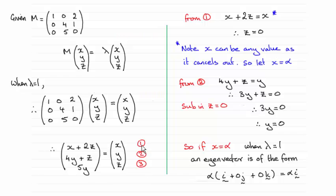And then starting from 1, you can see that x plus 2z equals x. The x's will cancel out, leaving us with z equaling 0. Now because the x's cancel out, they could be any value. So I've said that I'll let that value for x be alpha.